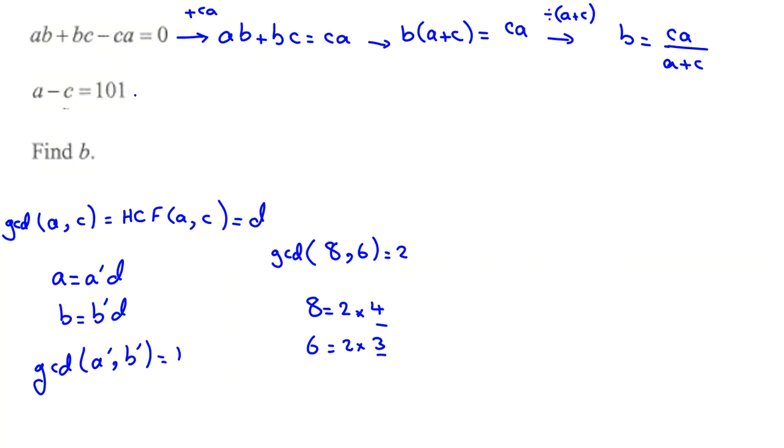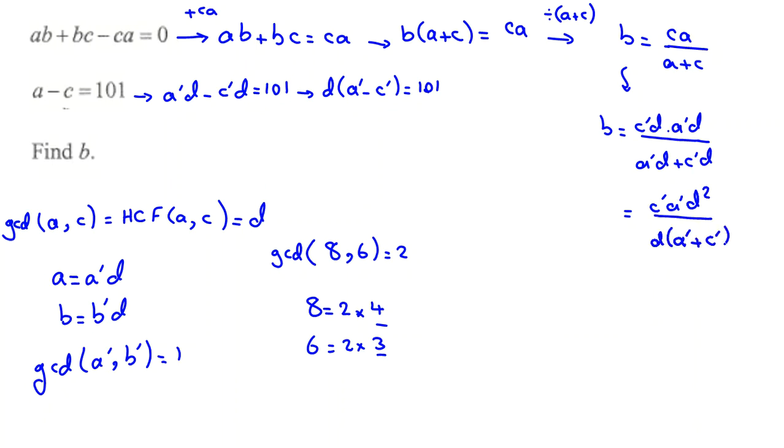Now if I replace here, I can say a prime D minus c prime D equals 101. So D times a prime minus c prime equals 101. And here I can say B equals c prime D times a prime D all over a prime D plus c prime D. If we rewrite it, it will be c prime a prime D squared over D times A prime plus c prime. Simplify D from denominator and numerator.